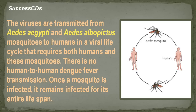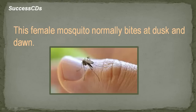There is no human-to-human dengue fever transmission. Once a mosquito is infected, it remains infected for its entire lifespan. This female mosquito normally bites at dusk and dawn.